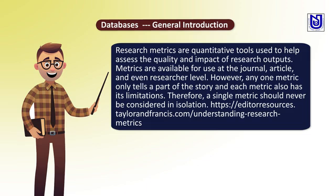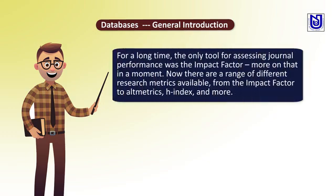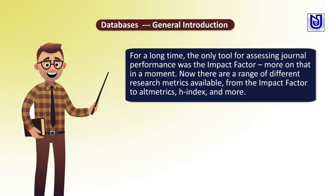Therefore, a single metric should never be considered in isolation — that is the most important point. For a long time, the only tool for assessing journal performance was the impact factor. But now there are a range of different research metrics available, from the impact factor to Altmetrics, H-Index, and more.